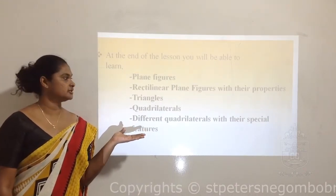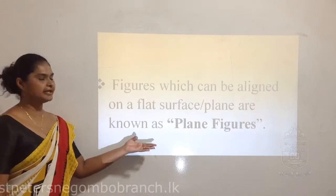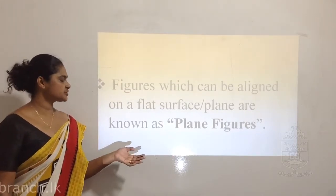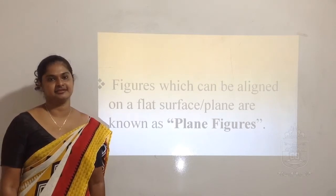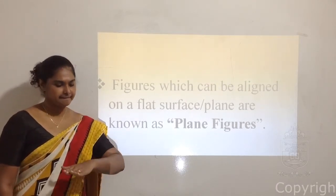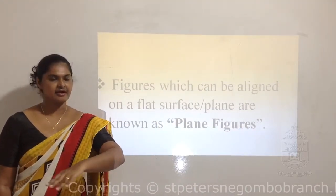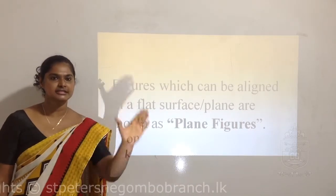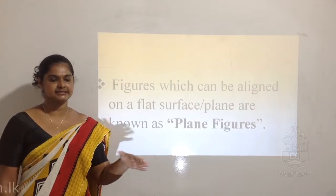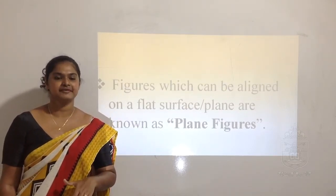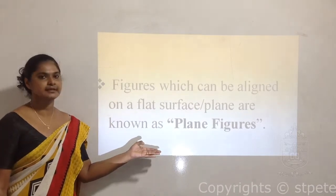Before going to rectilinear plane figures, we should learn what plane figures are. Figures which can be aligned on a flat surface or a plane are known as plane figures. There are horizontal planes and there are vertical planes. Whatever figures that can be kept nicely aligned or flat figures which can be kept on a surface - it can be horizontal or vertical - are known as plane figures.